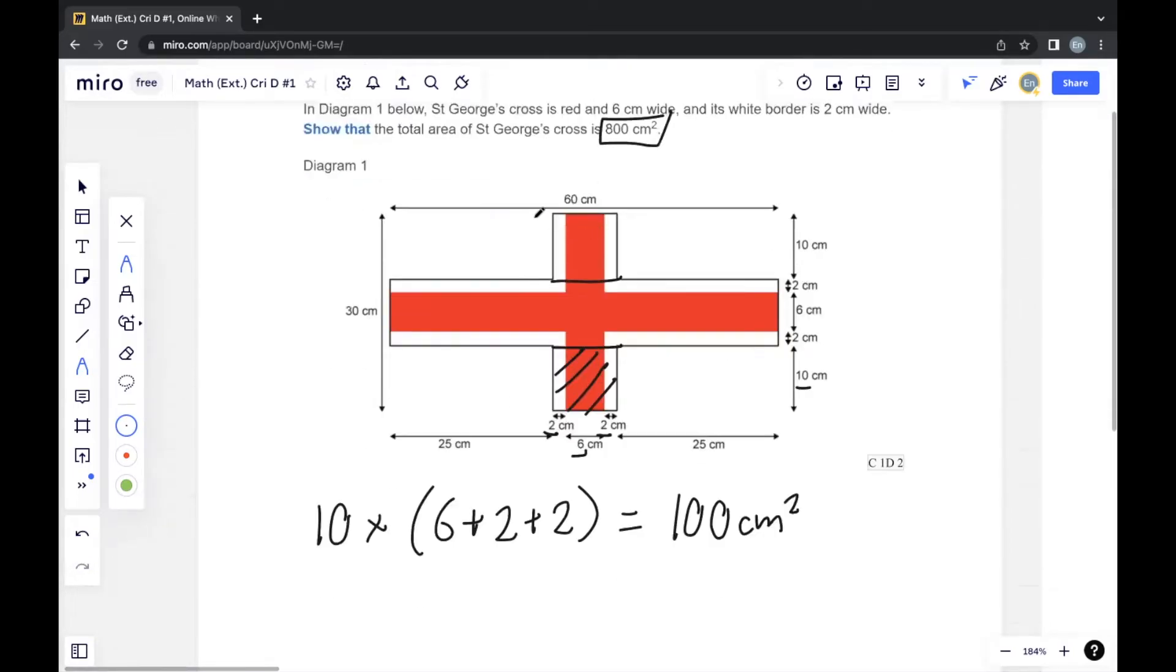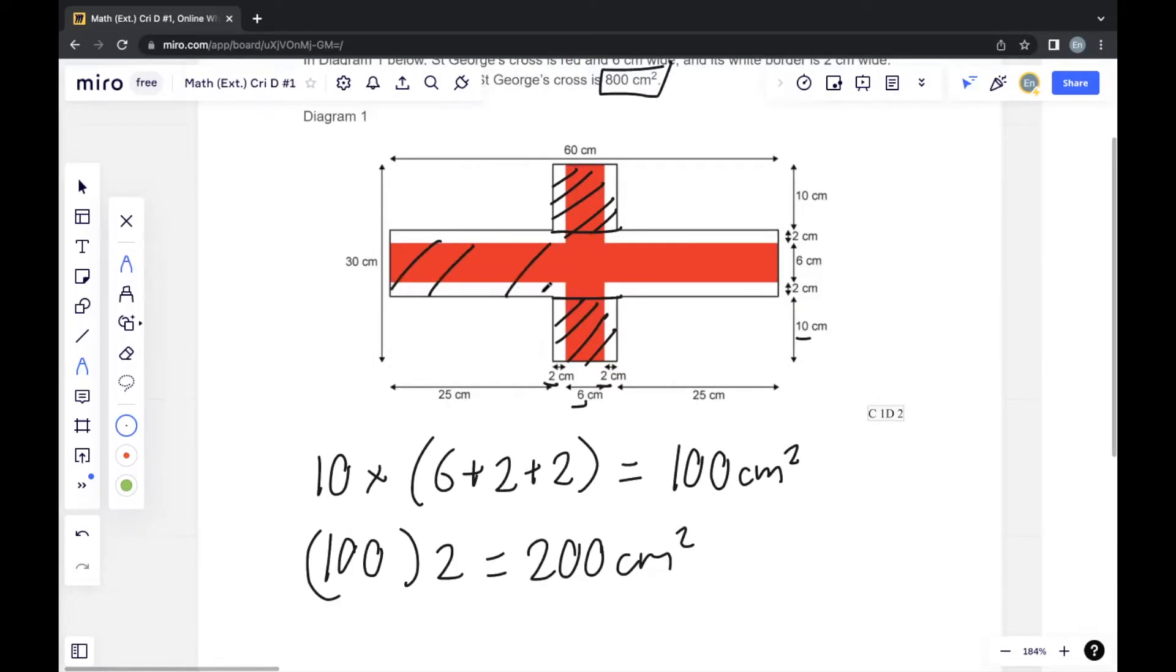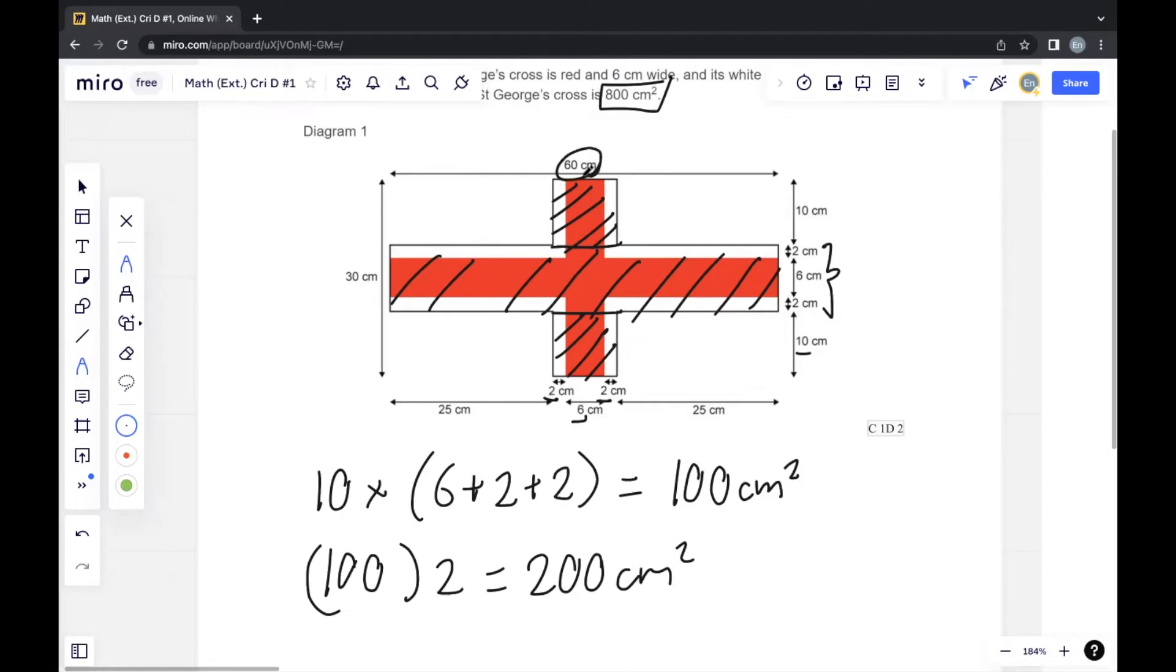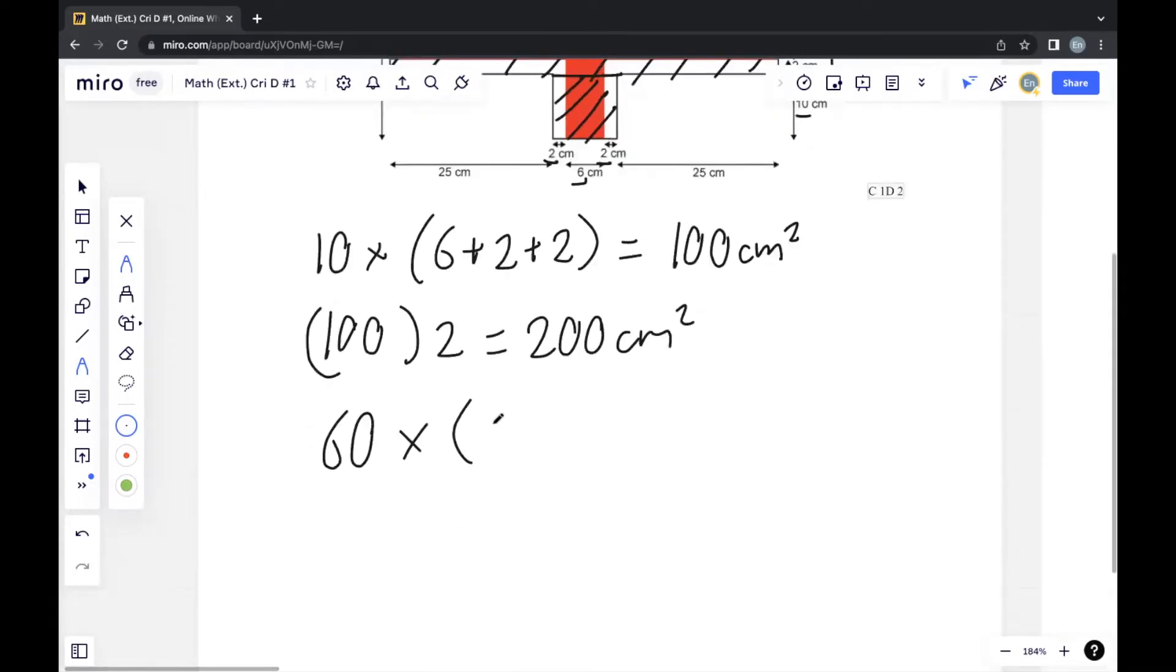Since this rectangle is 100 cm², we can tell that this identical rectangle should also be 100 cm². Multiplying 100 by 2, we get 200 cm². For the last larger rectangle in the middle, we can calculate the width by adding all of these values to the side. The length is already given as 60. So we have 60 multiplied by 2 plus 6 plus 2, which is 10 once again, giving us 600 cm².